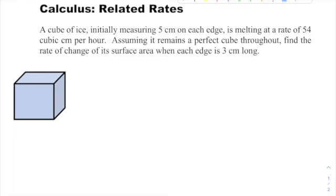In this case, it's a cube of ice, initially measuring 5 centimeters on each edge. It's a cube, so all the edges are congruent: 5, 5, 5 - length, width, and height.